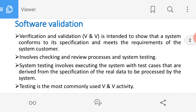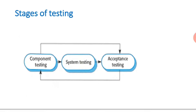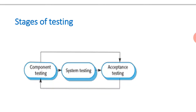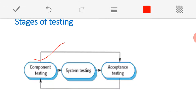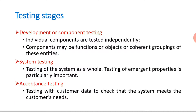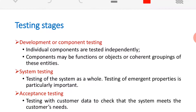Testing is the most commonly used activity in verification and validation. Verification and validation is essentially performing system testing. Testing will be done at three different stages: the first is component testing, the second is system testing, and the third is acceptance testing. We will discuss all three stages one by one.